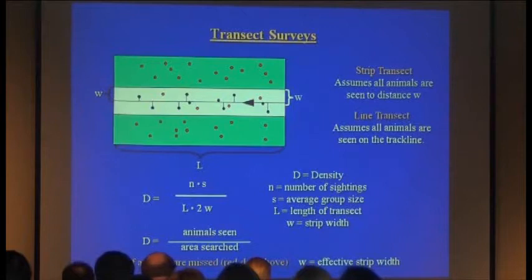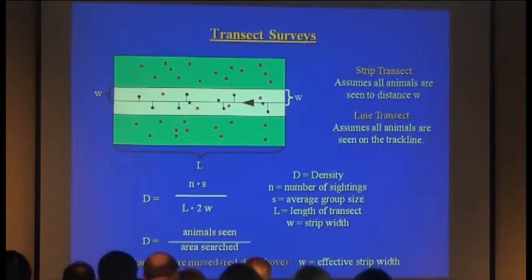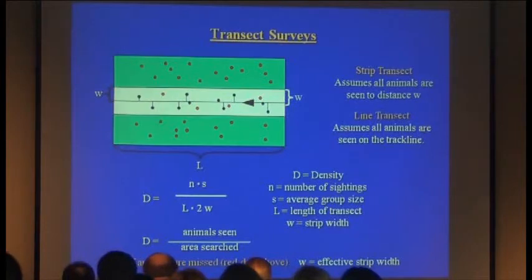Line transect is really just a simple extension of strip transects — it loosens the assumption, only requiring that all animals are seen on the transect line itself. Some animals within the truncation distance W are missed, and you estimate the fraction missed by fitting a curve through the distributions of perpendicular sighting distances. Fortunately, some very clever people including Jeff Lake and Len Thomas have written software to make this sometimes complicated mathematical process of estimating effective strip width simple and plug-in.